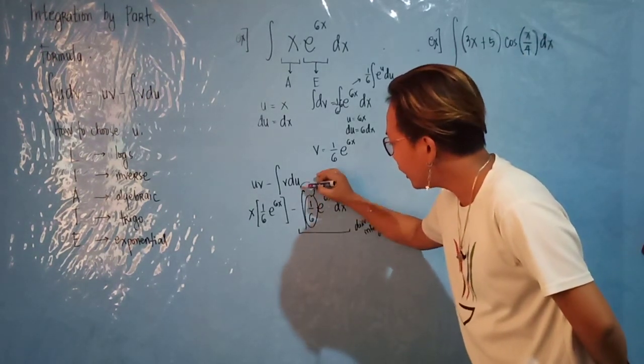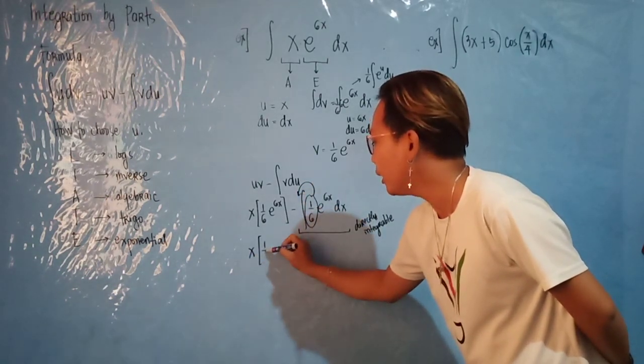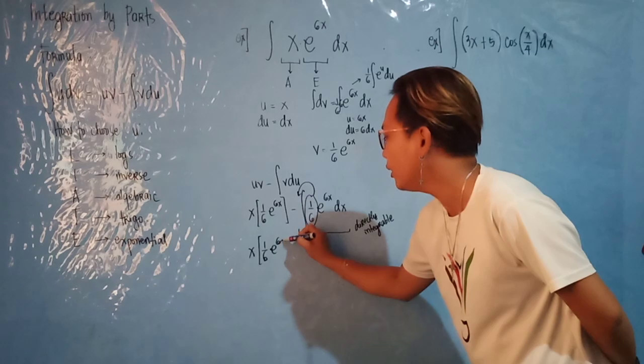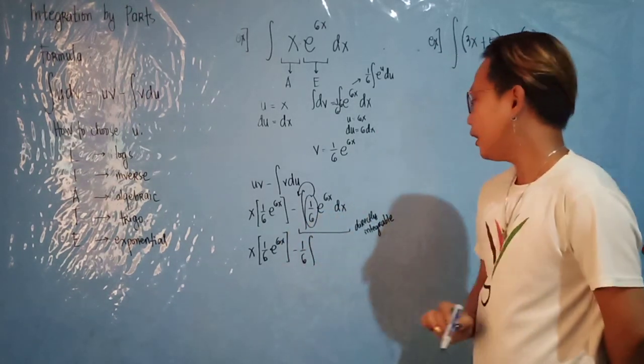Now this is constant, so we can factor it out. This will become x multiplied by 1 over 6 e raised to 6x, minus 1 over 6.